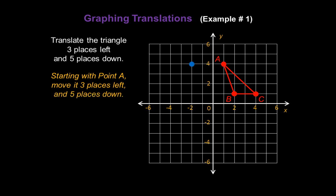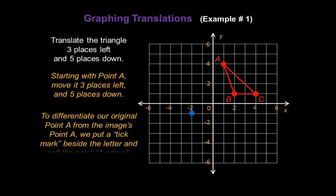And then five places down: one, two, three, four, five. Now, to differentiate our original point A from the image's point A, we put a tick mark beside the letter and call the point A prime, like this.